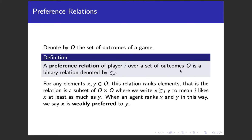We have a preference relation. We'll call the set of outcomes big O, and a preference relation is defined over that set. It's a binary relation represented with a symbol we read as 'weakly preferred to.' For any two elements x and y in our set of outcomes, the binary relation gives us an ordered pair — a subset of the Cartesian product O times O. If we have the ordered pair (x, y), we read that as x is weakly preferred to y for agent i, meaning agent i likes x at least as much as y.